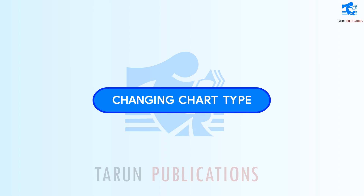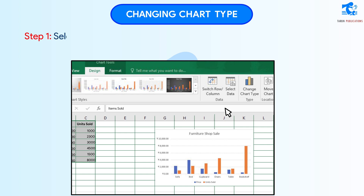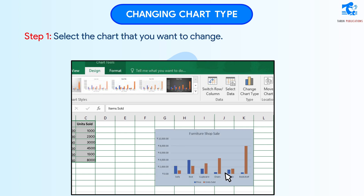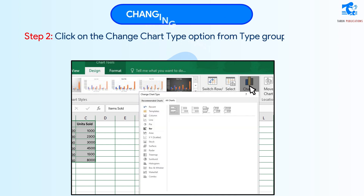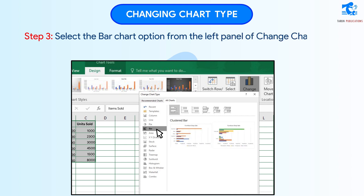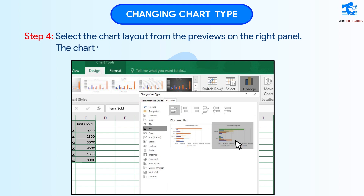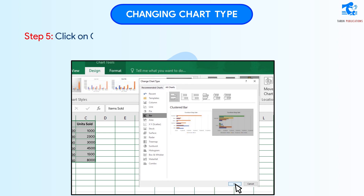Changing Chart Type: Follow these steps to change the chart type. Step 1: Select the chart that you want to change. Step 2: Click on the Change Chart Type option from Type Group in the Design tab. Step 3: Select the Bar Chart option from the left panel of the Change Chart Type dialog box. Step 4: Select the chart layout from the previews on the right panel. The chart will change into a bar chart. Step 5: Click on OK button.